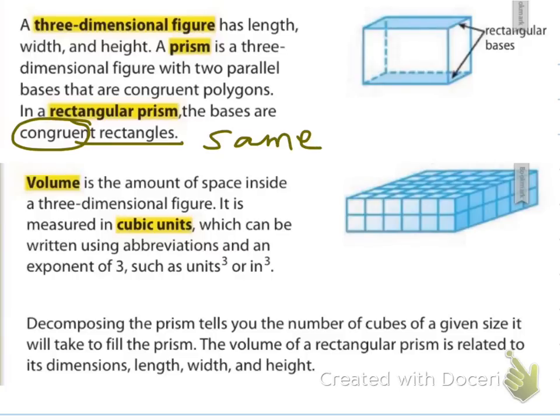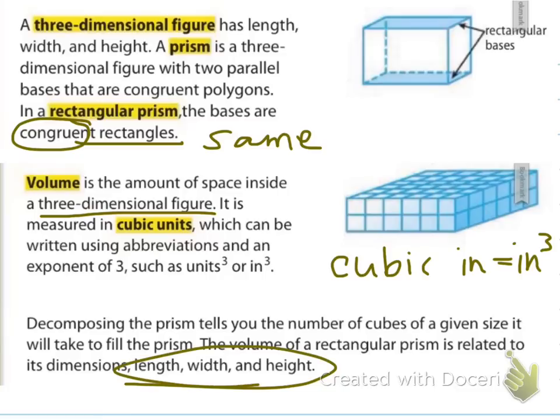So we think of it as our top and our bottom, our two congruent rectangles in this case. The volume is the amount of space inside a three dimensional figure. It is measured in cubic units, which can be written using the abbreviations and exponent of three. So it would be like units cubed or inches cubed. Instead of saying cubic inches, we would just say inches cubed. Decomposing the prism tells you the number of cubes of a given size it will take to fill the prism. We're going to now talk about finding the area of the base and then multiplying that times the height.